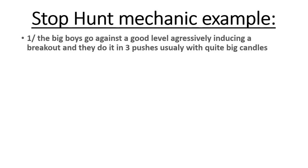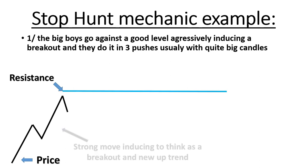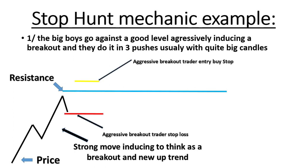Stop hunt mechanic: first, the big players go against a good level aggressively, inducing a breakout, and they do it in three pushes usually with quite big candles. Here is our resistance level — a strong level. They make one push, going quite steeply against the level. When they do that, the aggressive traders will put their entry at my yellow line here and their stop loss at my red line here, so these will be automatic orders.